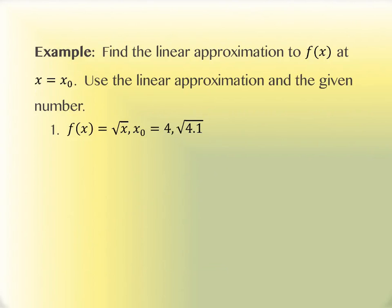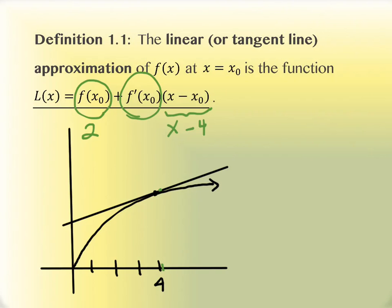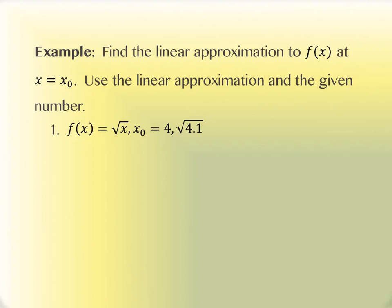We're going to find this for the function defined above: f(x) = √x. We have the x₀ value — the value where we can easily find the square root — and the value we really care about is the square root of 4.1. We have to calculate several things. First, f(x₀) = f(4), and we already said this is 2.